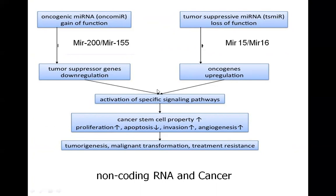Overactivity of oncogenic microRNAs like MIR-200 or MIR-155 would lead to down-regulation of tumor suppressor genes. On the other hand, if we have loss of function or underactivity of MIR-15 or MIR-16, which are geared towards tumor suppression, there would be oncogene up-regulation or activation. An example of this is down-regulation of microRNA leading to overexpression of BCL2 in leukemia and in lymphoma.